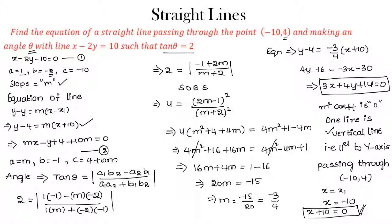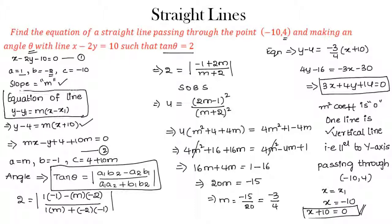So these are the equations of the lines making angle theta with the given line such that tan theta equals 2. Make note of the formula to find the angle between two lines in terms of tan, and the slope-point form. Hope you understood the concept. For more videos, visit our website. Thanks for watching, have a nice day.